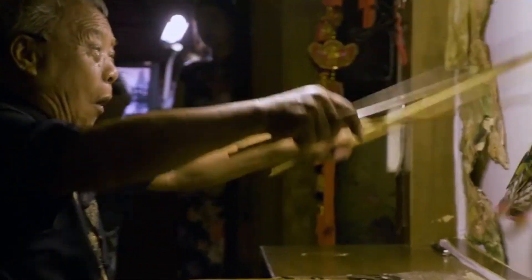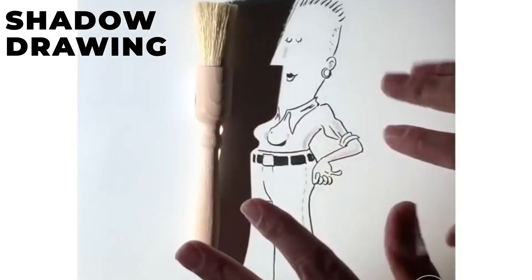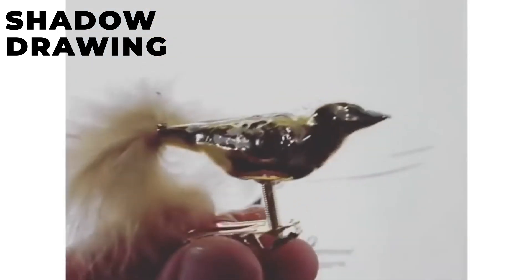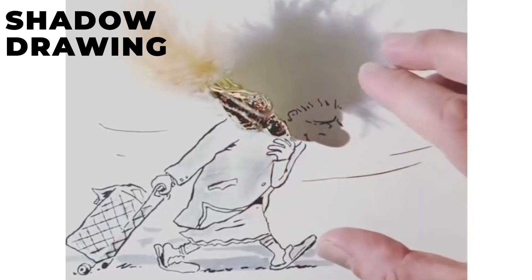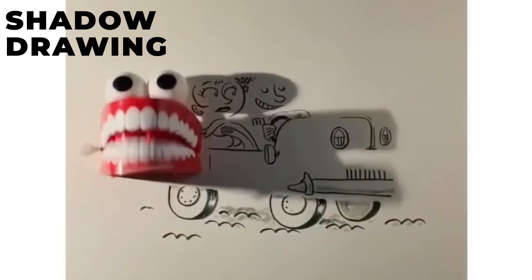Another exciting form of shadow art is shadow drawing. Artists experiment with light and objects to create shadows that resemble incredible images. By strategically placing objects and playing with lighting angles, they can make shadows mimic animals, people, or even architectural structures.